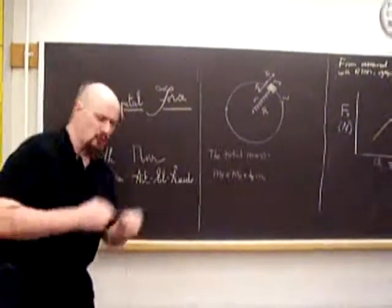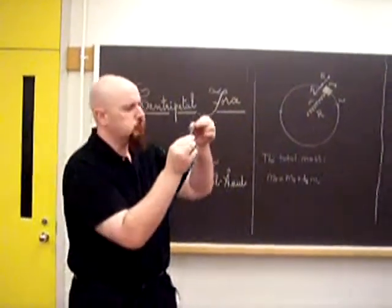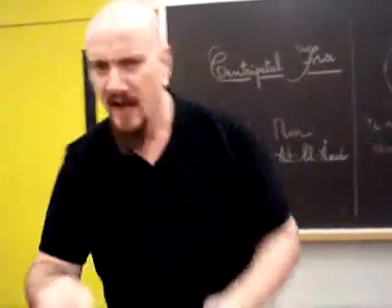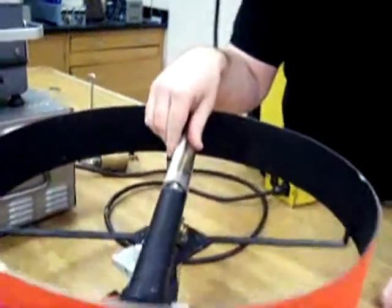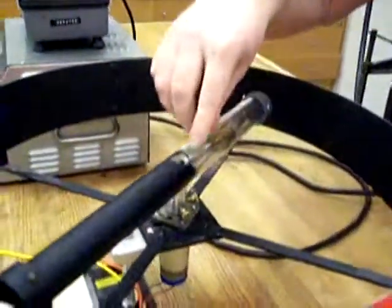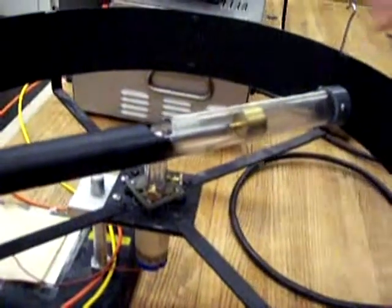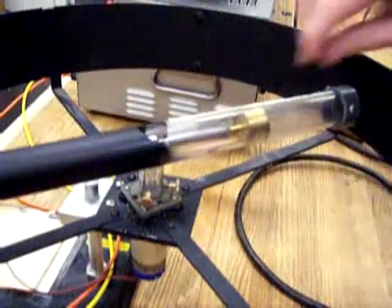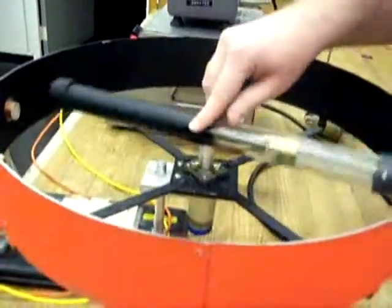So just like last week, we have a spring that we're interested in. And this spring is contained inside of the same lucite tube. And there's a mass cylinder at the end of the spring. So this week, instead of having various masses provide our elongation, we'll have centripetal acceleration provide our elongations.